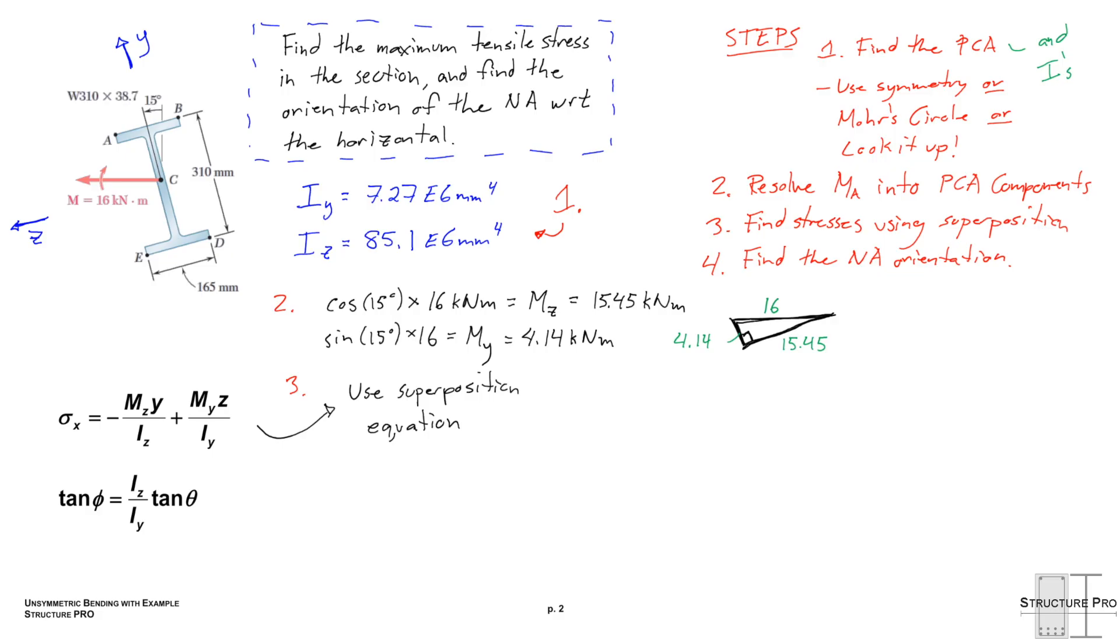All right, step three, find stresses using superposition. So I've already written down the superposition equation here. And just note, there's some negatives and some positives. And that really has to do with the direction we apply positive z to and positive y to. So you can work that out on your own and just see how that works, how this negative Mz y over Iz would change if we had our z positive the other way.